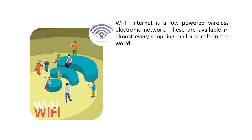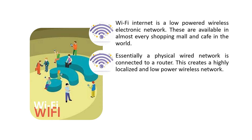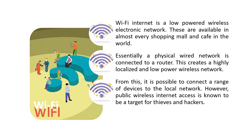The next type is Wi-Fi wireless communication. Wi-Fi internet is a low-powered wireless electronic network available in almost every shopping mall and cafe in the world. A physical wired network is connected to a router, which is the backbone of this wireless network. This creates a highly localized and low-power wireless network, making it possible to connect a range of devices to the local network wirelessly.